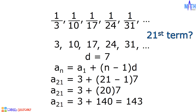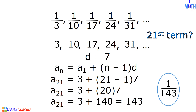143 is the 21st term of the arithmetic sequence 3, 10, 17, 24, 31, and so on. The reciprocal of 143 is 1/143, and this is the 21st term of the harmonic sequence.